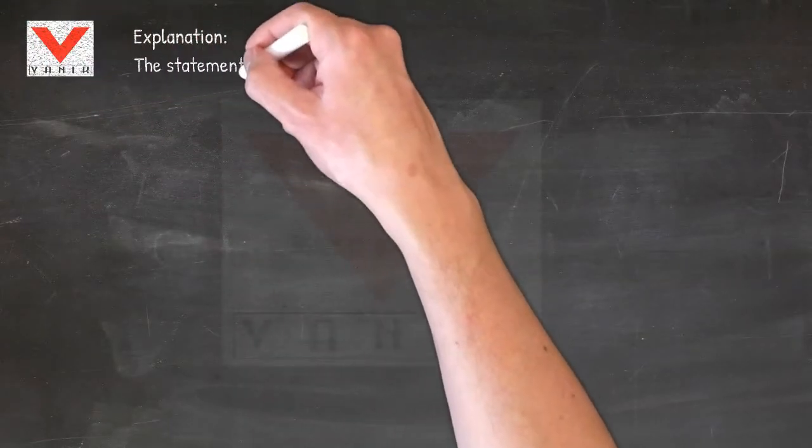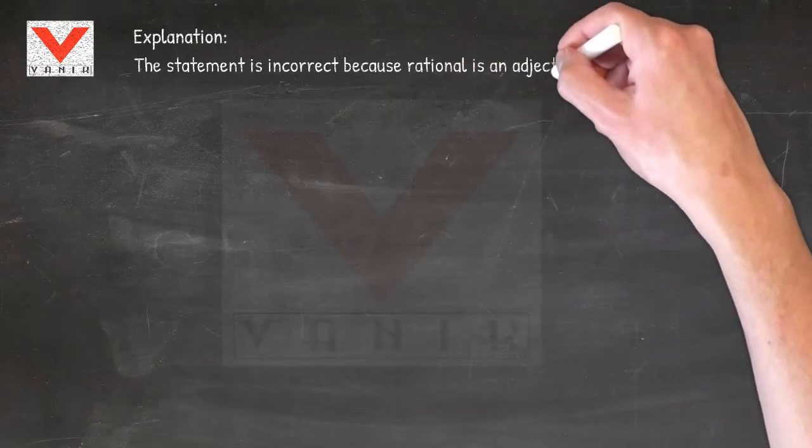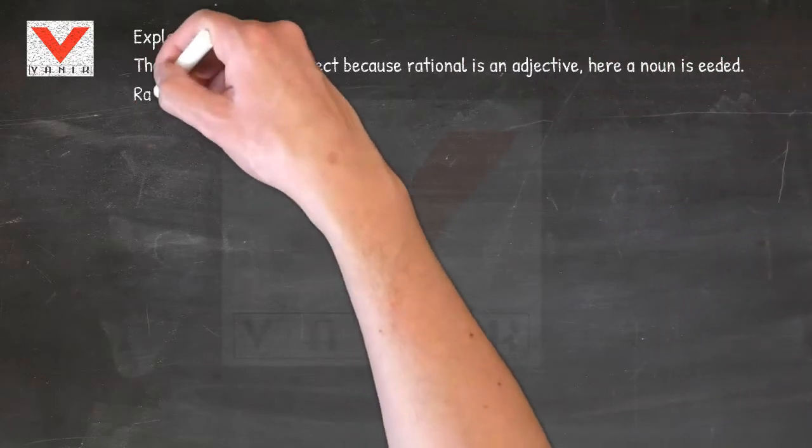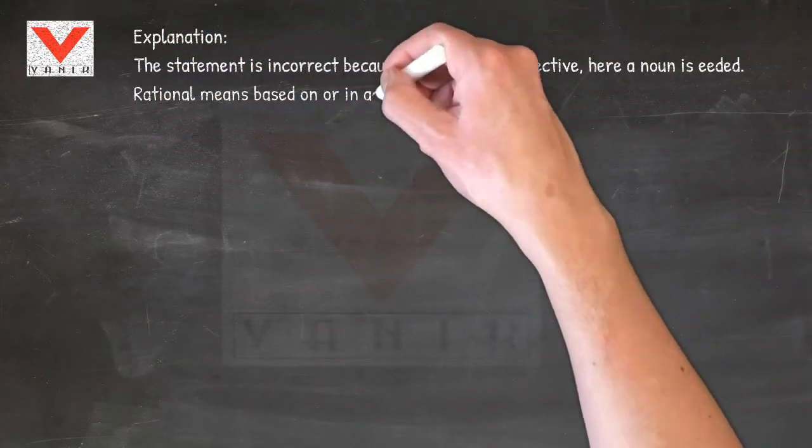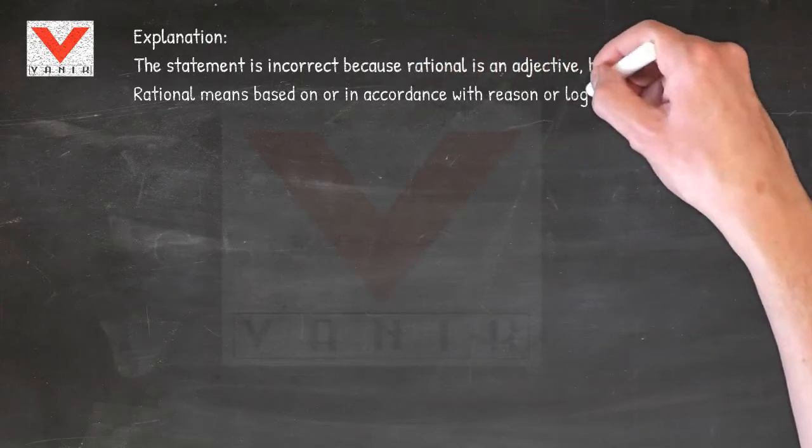Explanation: The statement is incorrect because rational is an adjective, here a noun is needed. Rational means based on or in accordance with reason or logic.